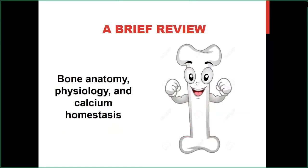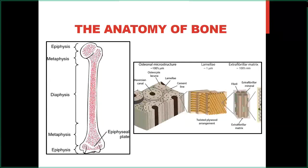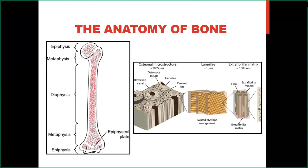The long bones are made up of three anatomic regions: the diaphysis or shaft, the metaphysis which includes the growth plate, and the epiphysis which is the articular surface. In growing children, the epiphyseal plate consists of a layer of hyaline cartilage, the site of endochondral bone formation. At the macroscopic level, bone can be either cortical or trabecular. The vast majority of our skeleton — about 85 percent — is cortical bone.